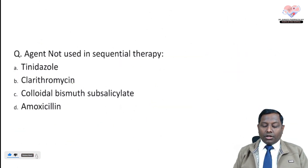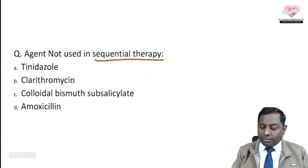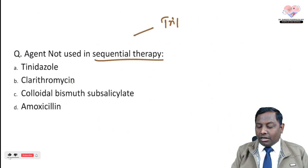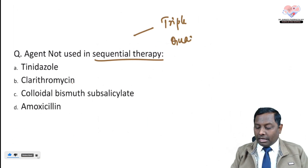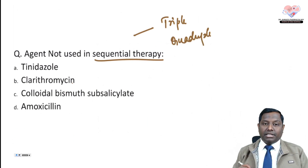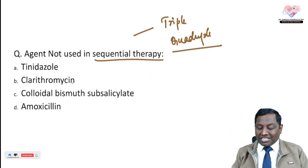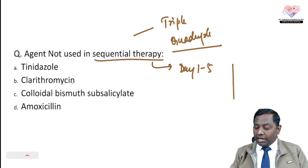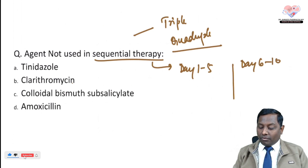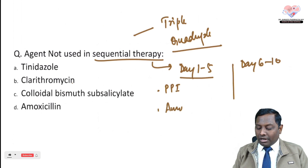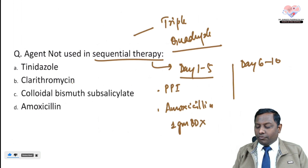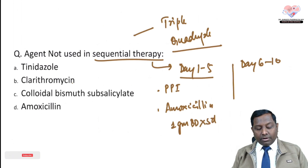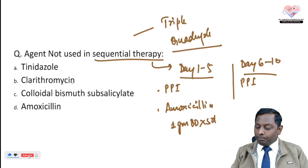The next question is about sequential therapy for H. pylori. Previously, we have read triple therapy and quadruple therapy. In sequential therapy, a different group of antibiotics is given from day 1 to 5, and another group from day 6 to 10. A PPI is given throughout all scenarios, along with amoxicillin 1 gram twice daily for the first five days.